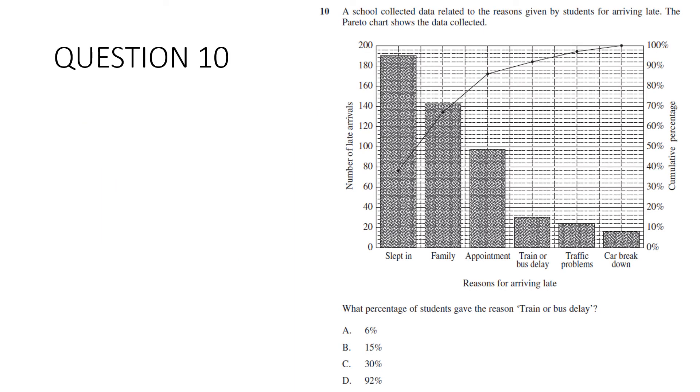Question ten. School collected data related to the reasons given by students for arriving late. The Pareto chart shows the data collected. What percentage of students gave the reason train or bus delay? So remember with the Pareto chart we've got column graph which relates to this axis. And then we've got a cumulative frequency graph which relates to this axis. Now given it's in percentages or we want a percentage, it's probably easiest to do the cumulative percentage and work it out from there. Remember this is a running total. So we're adding on each time. So all we've got to do is figure out how much has been added on from that point for train or bus delay. This point. So it's just a matter of reading off here. So this here is at 86. And this point here is at 92. 92 take away 86 is 6%. And that's our answer.